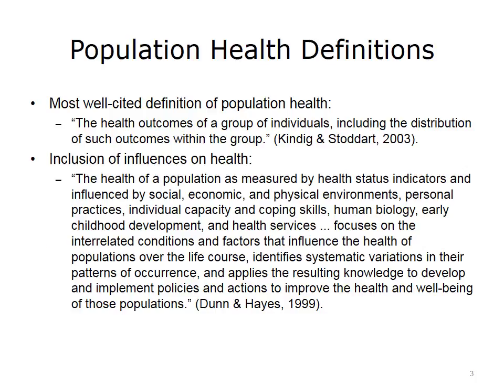The most well-cited definition of population health comes from an American Journal of Public Health article, 'What is Population Health?' by Kindig and Stoddart, who define population health as the health outcomes of a group of individuals, including the distribution of such outcomes within the group.